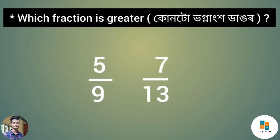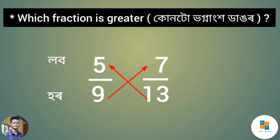First example: 5/9 and 7/13 — who is greater? Friends, here is an easy trick. Take the first fraction's numerator and the second fraction's denominator, and the second fraction's numerator — cross multiply. So the first fraction's numerator is 5 and the second fraction's denominator is 13.